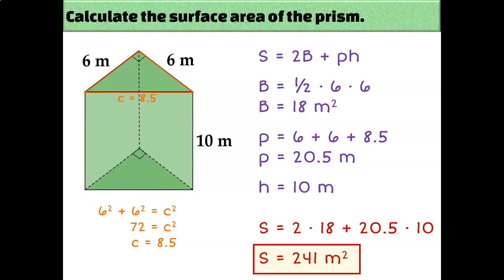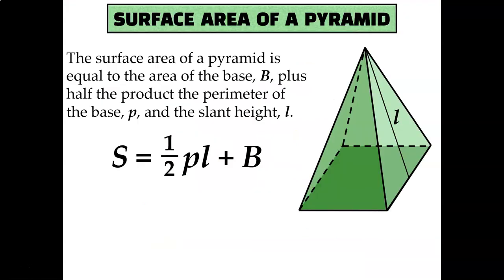S = 2B + PH is the formula for prisms. For pyramids, the formula is S = one half PL + B. P is the same as before — the perimeter of the base. L is new: instead of the height of the pyramid itself, we want the slant height, which goes along the slanted side from the apex at the very top of the pyramid down to the base. B is again the area of the base.